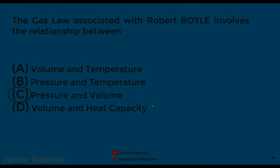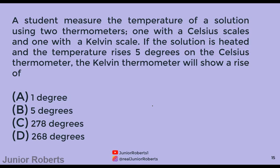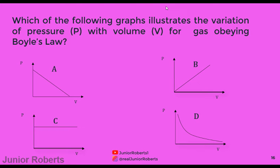A student measures the temperature of a solution using a Celsius thermometer and a Kelvin thermometer. The temperature rises 5 degrees on the Celsius thermometer. The Kelvin thermometer will also show a rise of 5 degrees, because a one-degree change on the Celsius scale equals a one-degree change on the Kelvin scale. The answer is B.